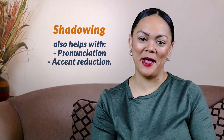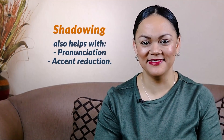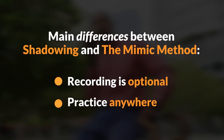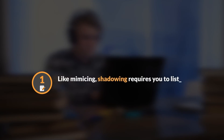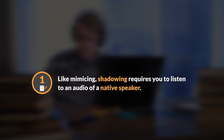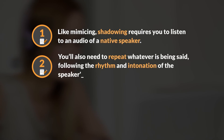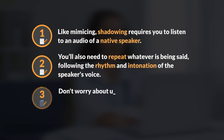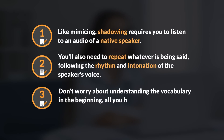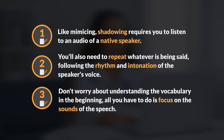Shadowing also helps with pronunciation and accent reduction. With shadowing, recording yourself repeating the words is optional, and you can practice almost anywhere if you're comfortable repeating words out loud in public. The best part is you can do it on your own — all you need is your laptop, your smartphone, and some earphones. Like mimicking, shadowing requires you to listen to audio of a native speaker. You'll also need to repeat whatever is being said, following the rhythm and intonation of the speaker's voice. Don't worry about understanding the vocabulary in the beginning — all you have to do is focus on the sounds of the speech.